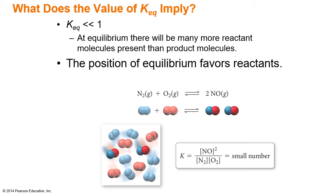If we have an equilibrium constant value that is smaller than one, this means that the reactants are favored. The value for the products is going to be smaller than the concentration of the reactants, meaning more reactants are present and our position of equilibrium favors the reactants.